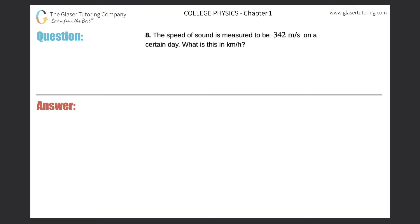Number eight: the speed of sound is measured to be 342 meters per second on a certain day. What is this in kilometers per hour? It's a conversion problem, so let's write down what we need to do. We need to convert 342 meters per second into kilometers per hour.